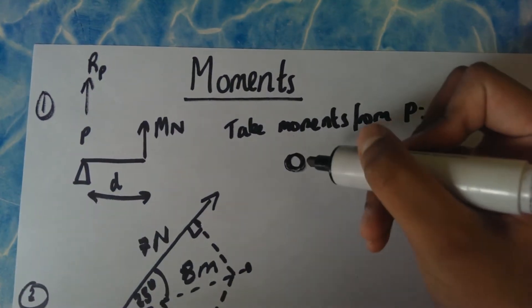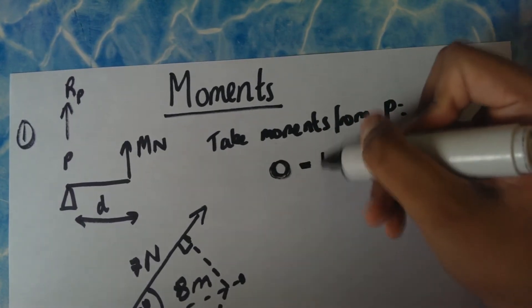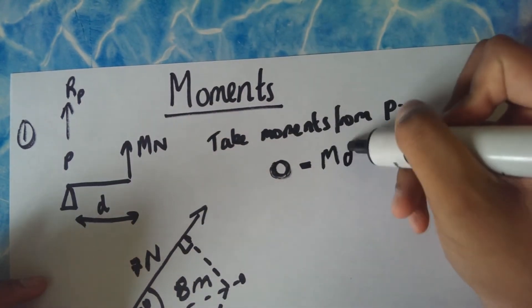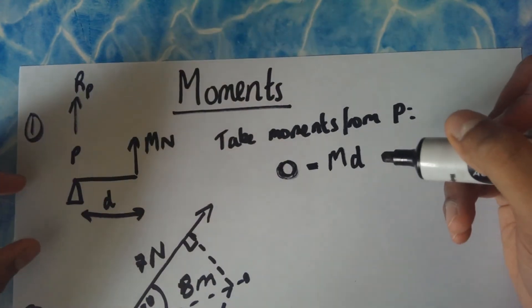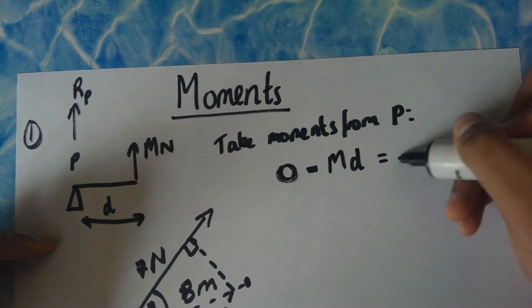And then if you take the counterclockwise moments you'll get M, which is the force which I've written in Newtons, times the distance D. And obviously if you were writing it in terms of - because we start with clockwise being positive, which is why we're in zero - your actual moment will be minus MD.